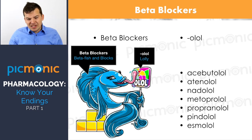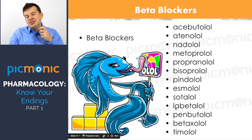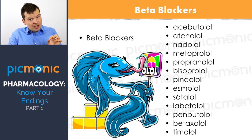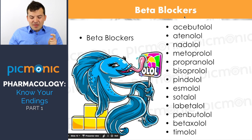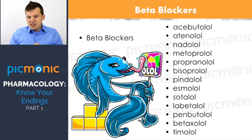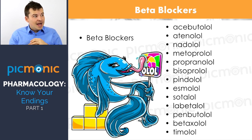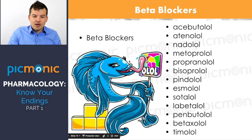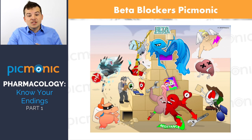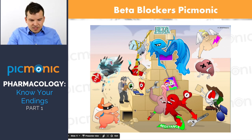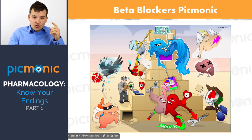Just by learning that ending, you can identify tons of different beta blockers — there's a huge list. A couple end in -A-L-O-L, which means they also have alpha-blocking capability. Now, when I say beta blockers, there's one thing you must be thinking about: monitor the heart rate. Beta blockers cause a beta receptor block, and one of those beta receptor effects is heart rate.